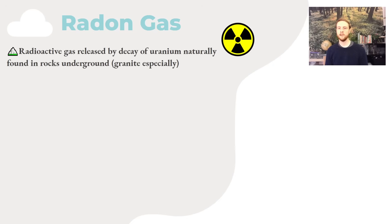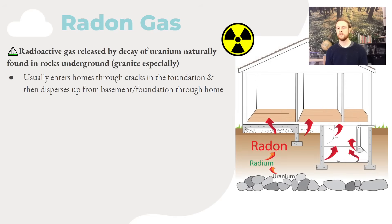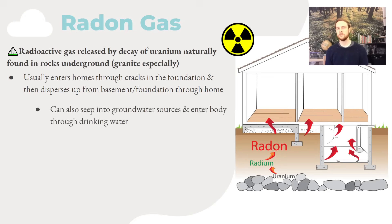Radon gas is a radioactive gas given off by the decay of uranium naturally found in rocks underground, with granite especially known to produce it. Cracks in your basement or foundation allow this naturally produced radon to enter your home, where it can rise with warm air from the furnace or enter the ventilation system and disperse throughout. Uranium in rocks first breaks down to radium, and then radium decays into radon. It can also seep into groundwater, so well water should be tested for radon.